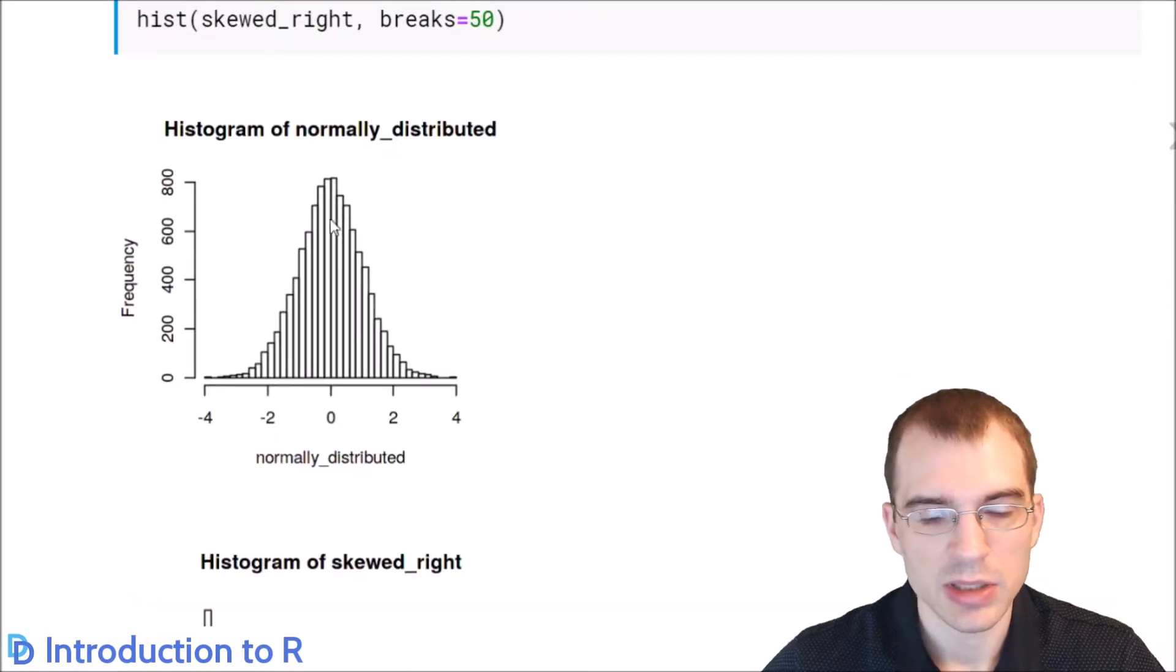This histogram here shows normally distributed data. Things are fairly regular and symmetric. This sort of data generally wouldn't require any sort of pre-processing in terms of reducing skew because it's already nice and even.